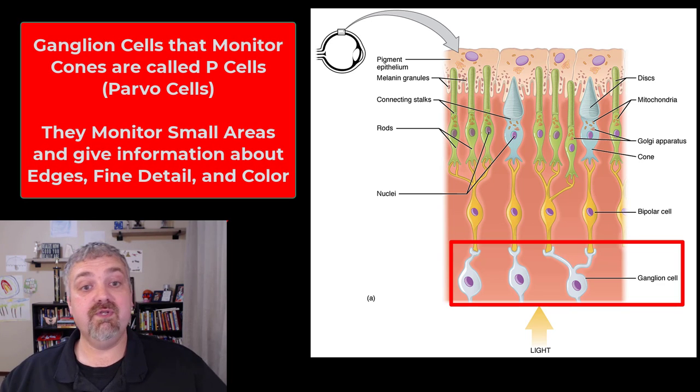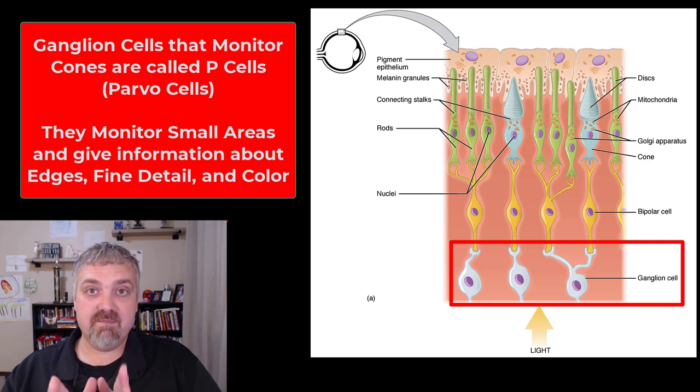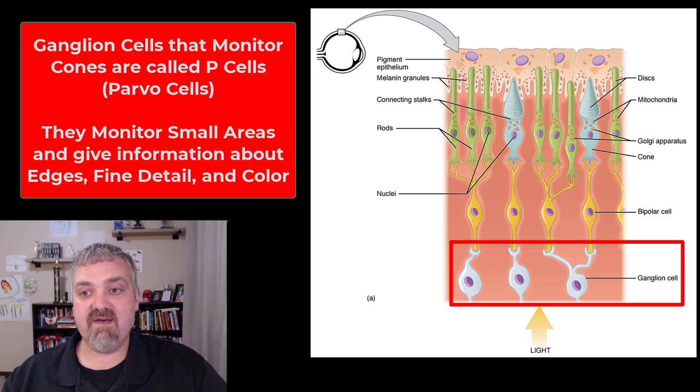The ganglion cells that are linked to your cones are called P cells or parvo cells. They have smaller areas they're responsible for. There's more of them, so you're going to get a lot more precise information about fine detail, edges, and the color we talked about.